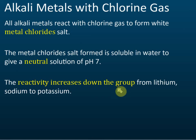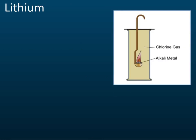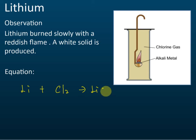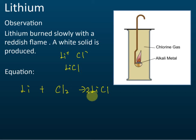Reactivity increases down the group — more and more reactive. For lithium, it burns slowly with a reddish flame and a white solid is produced. The equation: lithium reacts with chlorine gas to produce lithium chloride (LiCl). Lithium has a charge of +1 and chloride −1, so the formula is LiCl. To balance: 2Li + Cl₂ → 2LiCl.